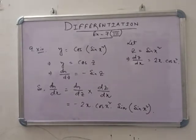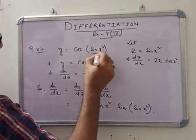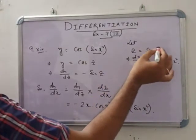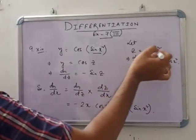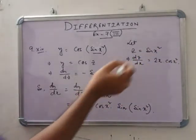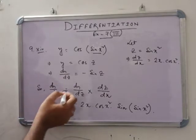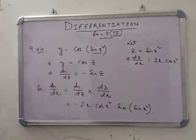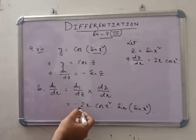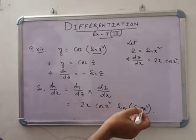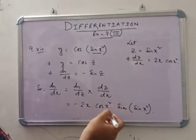In number 14, given y = cos(sin(x²)). Let z = sin(x²), so dz/dx = 2x · cos(x²). And y = cos(z), so dy/dz = -sin(z). By the chain rule, dy/dx = (dy/dz)·(dz/dx) = -sin(z) · 2x · cos(x²). Substituting back z = sin(x²), we get dy/dx = -2x · cos(x²) · sin(sin(x²)).